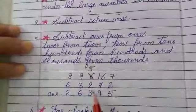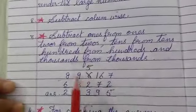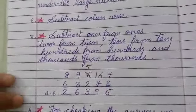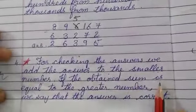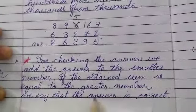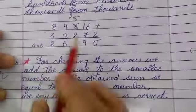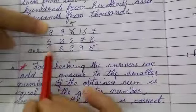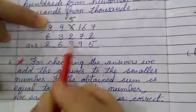Ones, tens, hundreds, thousands, ten thousands. So you will place them under each other and then subtract. For checking the answers we add the answer to the smaller number. If we obtain the sum equal to the greater number, we say that the answer is correct. If we get the same bigger number. Suppose if I add this and this I will get this, the top number. So this number plus this number, if we get this number, it means our sum is correct.